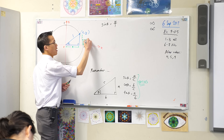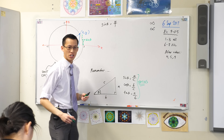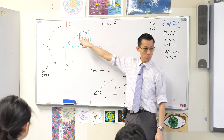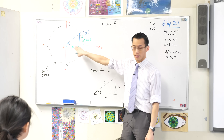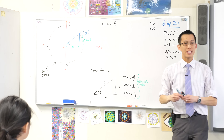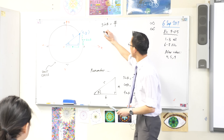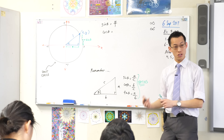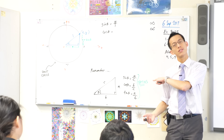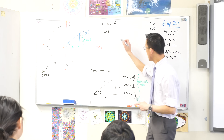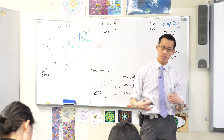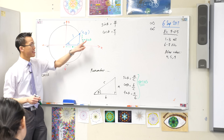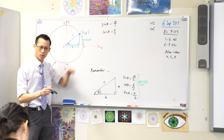I can use exactly the same logic for cos. Cos is adjacent on hypotenuse — in this triangle that's x over 1, and just like before, dividing by 1 doesn't change anything. So therefore x is simply equal to cos theta.